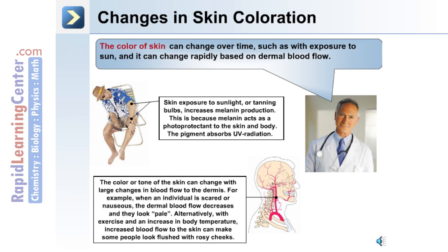The color or tone of the skin can change with large changes in blood flow to the dermis. For example, when an individual is scared or nauseous, the dermal blood flow can decrease and makes them look pale. Alternatively, with exercise and an increase in body temperature, this leads to increased blood flow to the skin, which can make some people look flushed with rosy cheeks.